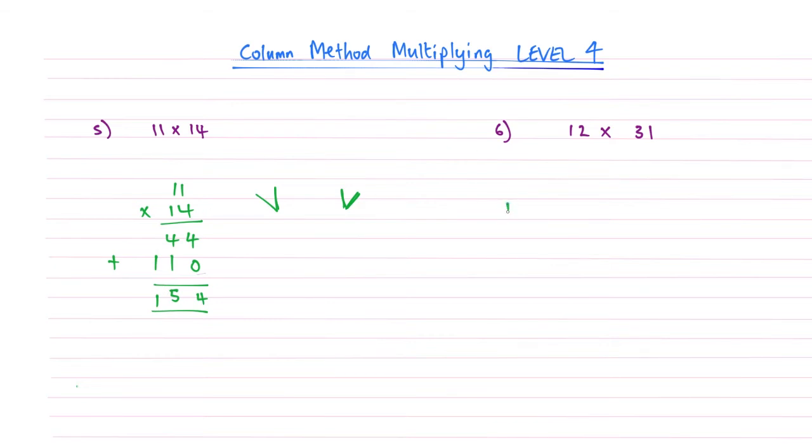And then question 6, 12 multiplied by 31. So 12 times 31, again, using exactly the same pattern, the pattern never changes. 1 times 2 is 2, 1 times 1 is 1, add your 0 because we're moving on to the 10s part. 3 times 2 is 6, 3 times 1 is 3.